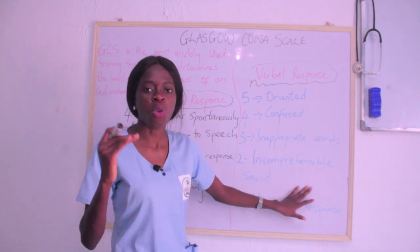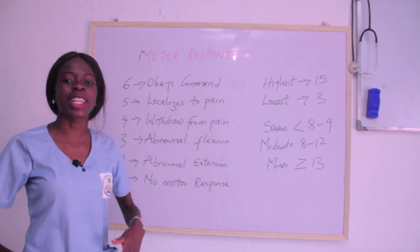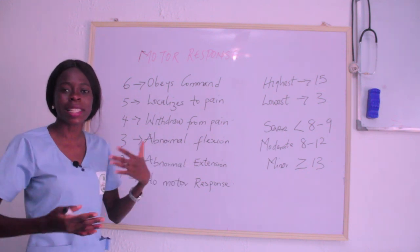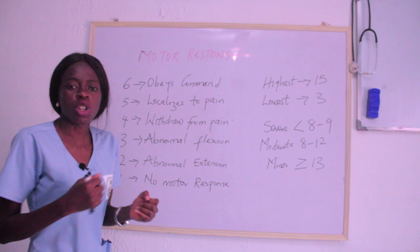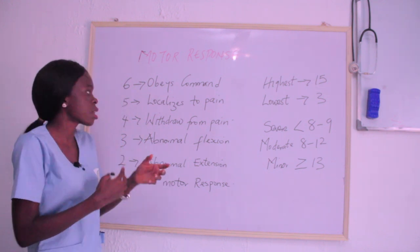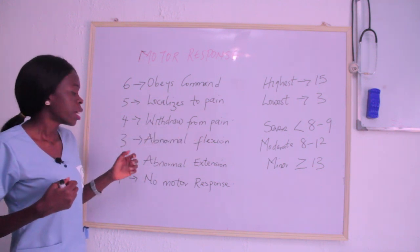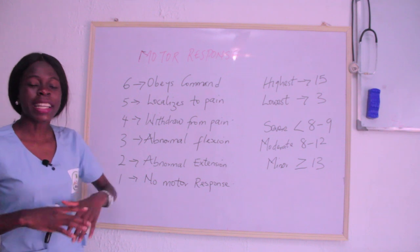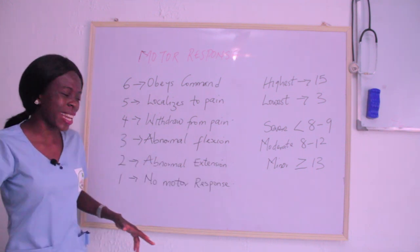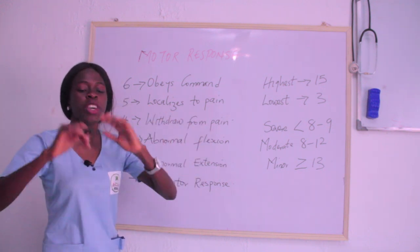That takes us to the Motor Response — that is movement. If I tell Mr. James to raise his hand and he obeys commands perfectly, I give him six. If he localizes to pain — moving toward the source of pain — I give him five. If he withdraws from pain rather than localizing to it, I give him four. If there is abnormal flexion, I give him three. If there is abnormal extension, I give him two. If there is no motor response at all, I give him one.